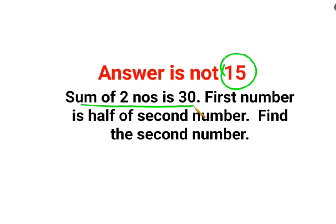The question is: sum of two numbers is 30. First number is half of second number. Find the second number.